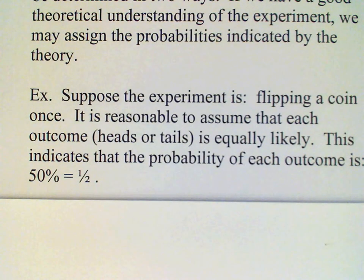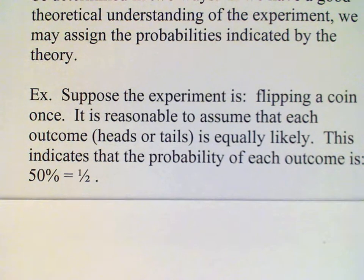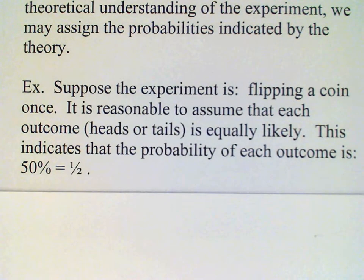flipping a coin. Then it is reasonable to assume that each outcome in the sample space, namely head or tail, is equally likely. And therefore this tells us the probability of each of these outcomes is 50% or one-half.